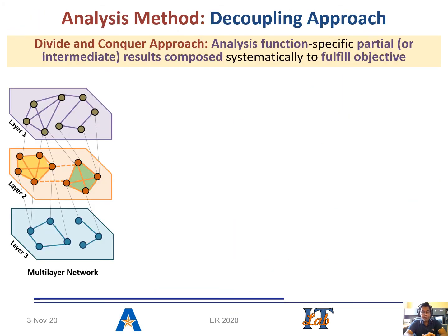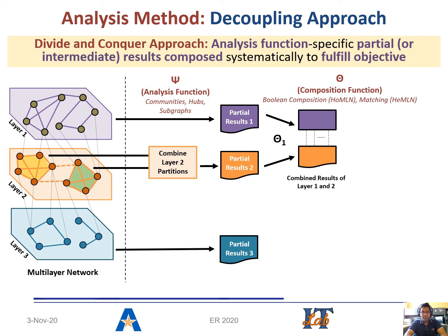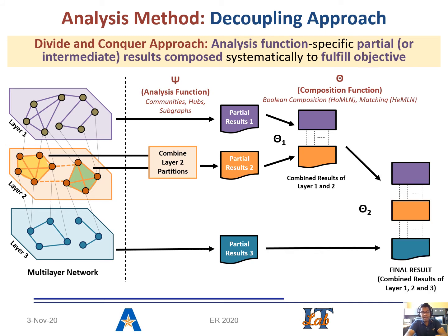We have used the efficient decoupling-based approach in order to analyze MLNs. Here, each of the layers is analyzed separately to generate the partial results using the function psi. This can correspond to communities, hubs, or subgroups. Then, these layer-wise partial results are combined iteratively using the composition function theta to generate intermediate and eventually the final required results.